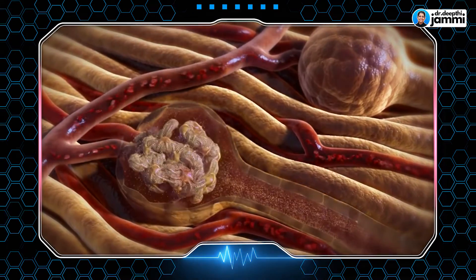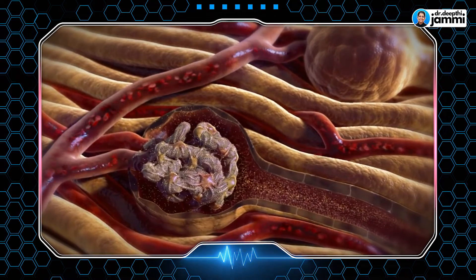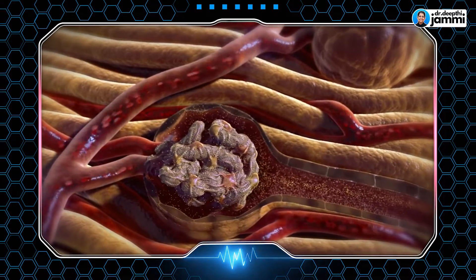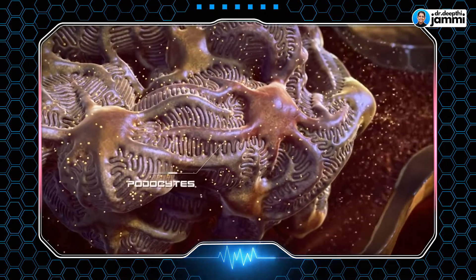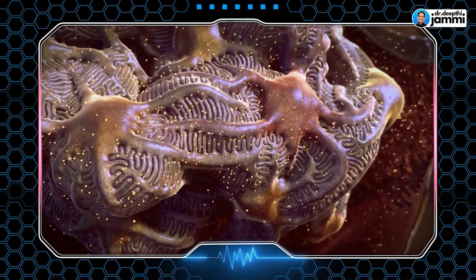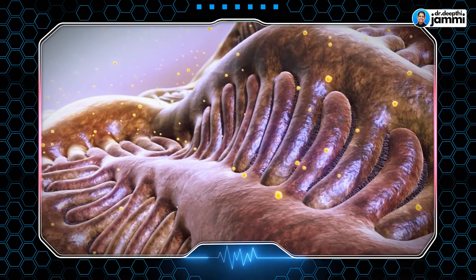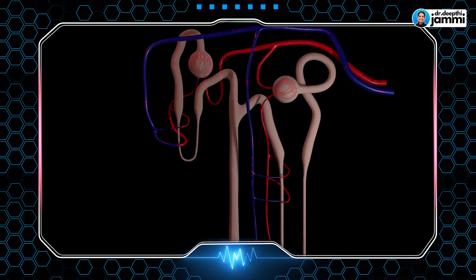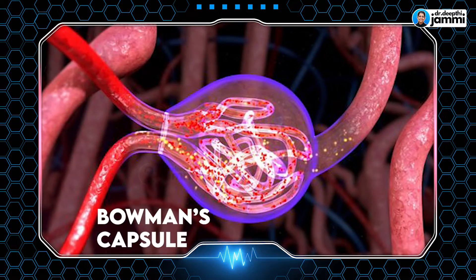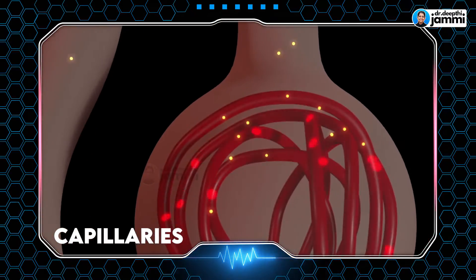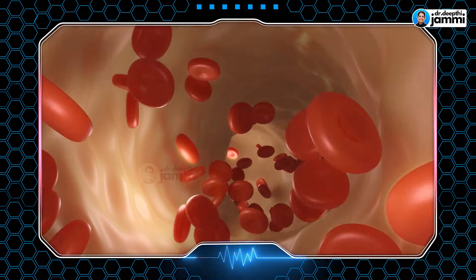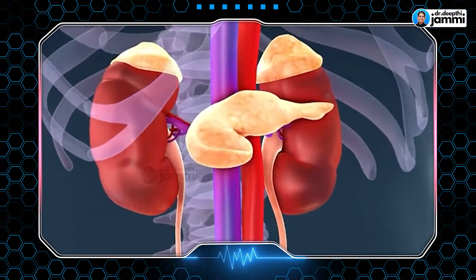Inside the glomerulus, we have blood vessels — capillaries. Surrounding these capillaries are cells called podocytes, which have finger-like projections. Between all the podocytes there is a slit diaphragm, which acts as the filtering mechanism in the glomerulus, working alongside Bowman's capsule to filter the blood and eliminate toxins.